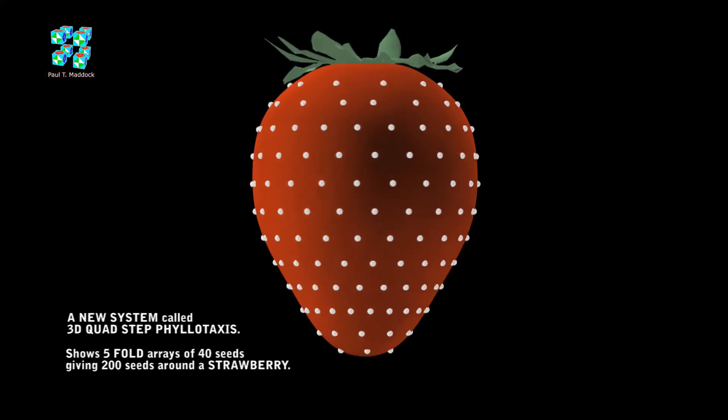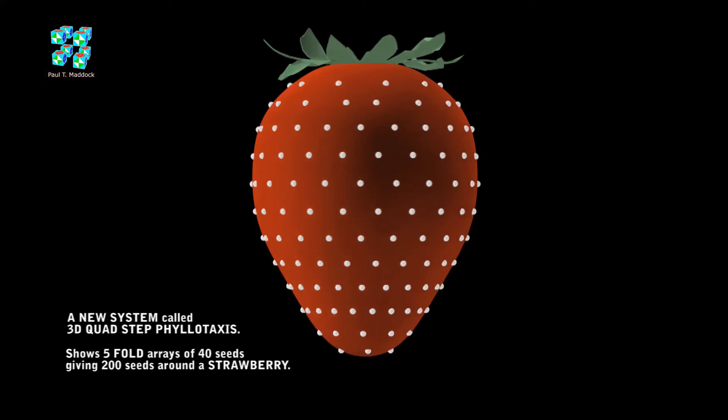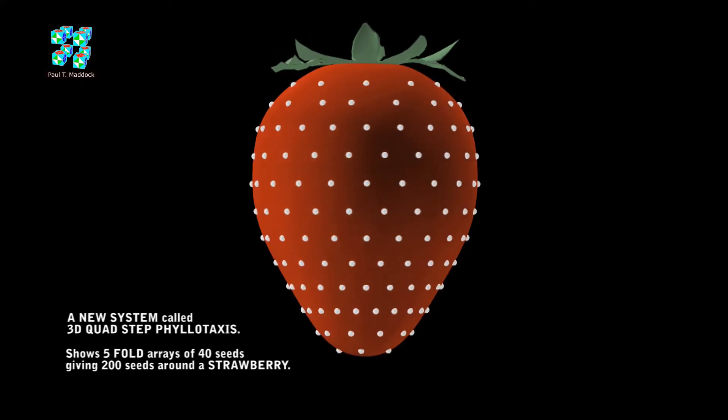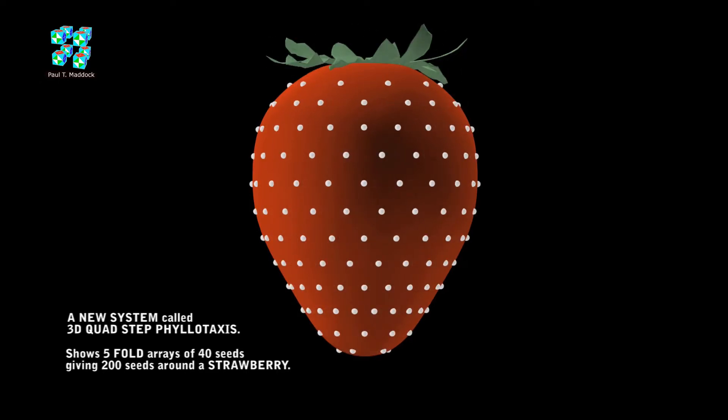Now I've showed you three examples of what you can do with four-step phyllotaxis. What you're looking at is three-dimensional reality. This is not just a two-dimensional theory. I've done some more research on this and I've got something else to show you.